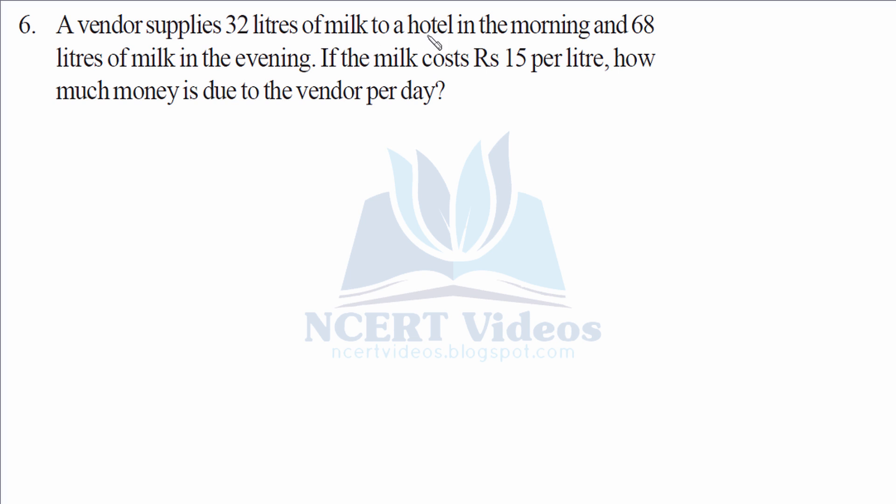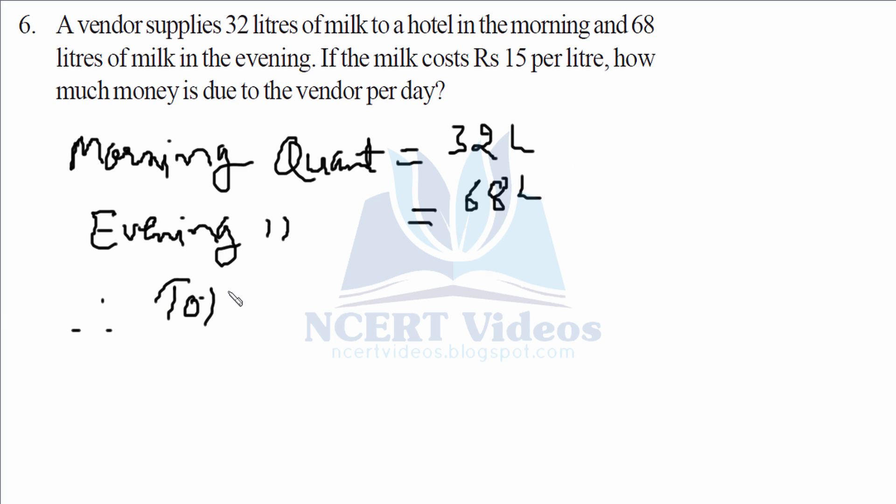Sixth, a vendor supplies 32 liters of milk to a hotel in the morning and 68 liters in the evening. Per liter cost is Rs 15. How much money is due with the vendor? So morning capacity or quantity sent to the hotel is 32 liters. Evening quantity is 68 liters. So total quantity in the day would be morning plus evening quantity. It turns out to be 100 liters.